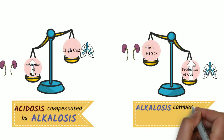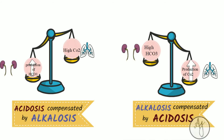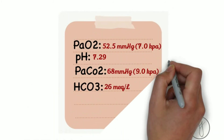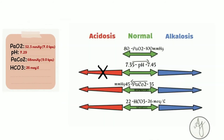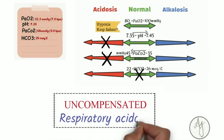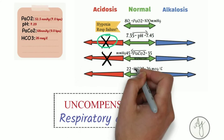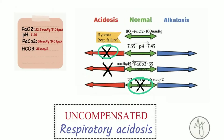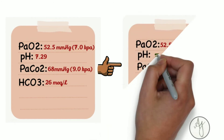A high bicarb value is compensated by increased carbon dioxide. In other words, acidosis is compensated by alkalinizing, and alkalosis is compensated by increasing the acidotic component. In our sample case, the pH is clearly acidotic, carbon dioxide is increased, the patient is hypoxic, but the bicarb is normal — high normal but nonetheless normal. This is a case of uncompensated respiratory acidosis, because the pH is still acidotic and the bicarb hasn't moved out of its normal range.